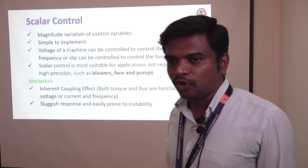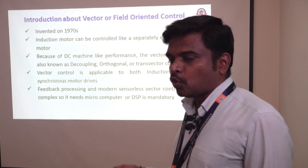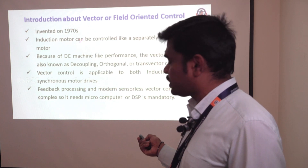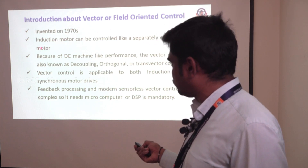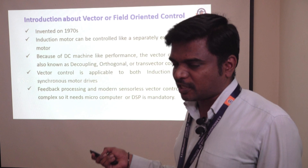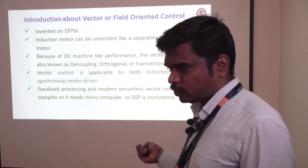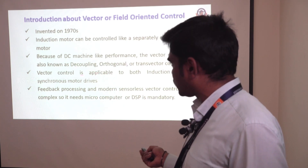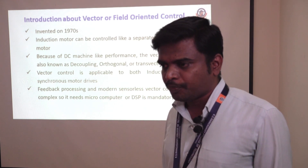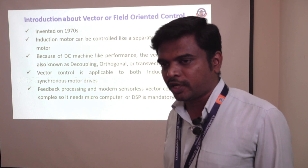Next we will see why we are implementing vector control. It was invented in the year 1970. In vector control, the induction motor is controlled in terms of a separately excited DC motor. DC machine-like performance is obtained in vector control. It is also called decoupling, orthogonal, or transvector control. Here a decoupling effect is followed — when one parameter is varied, the other parameter remains constant and is not disturbed, so the speed control is accurate and precise.